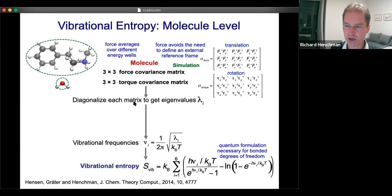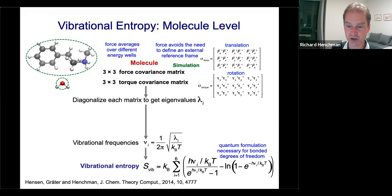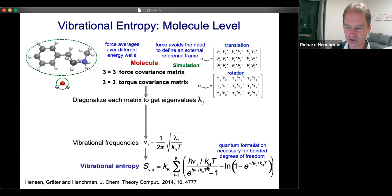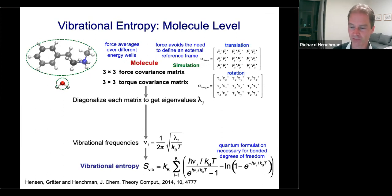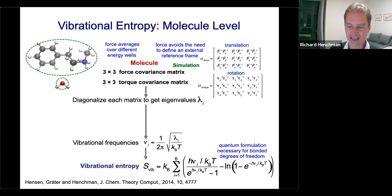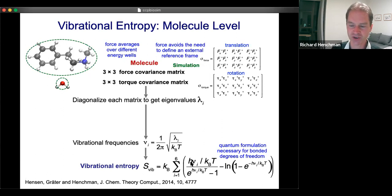Once you have these matrices you diagonalize them, as for any covariance method, to get the eigenvalues and then relate those to vibrational frequency in the harmonic approximation. We are making the harmonic approximation, but it's very useful because it means we can use the quantum harmonic oscillator equation, which gives quantum states and is important for covalent bonds — high frequency degrees of freedom that would give unphysical, even negative entropies for very high frequency motions if we only used classical formulations.